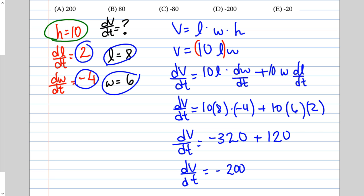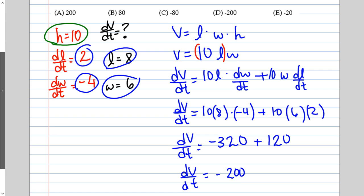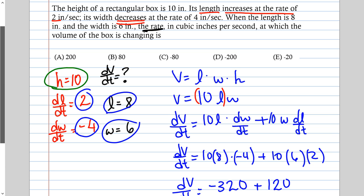This is multiple choice, so I don't need my units, but if it weren't multiple choice it would be negative 200 cubic inches per second. That's answer D. The volume is decreasing at a rate of 200 cubic inches per second.